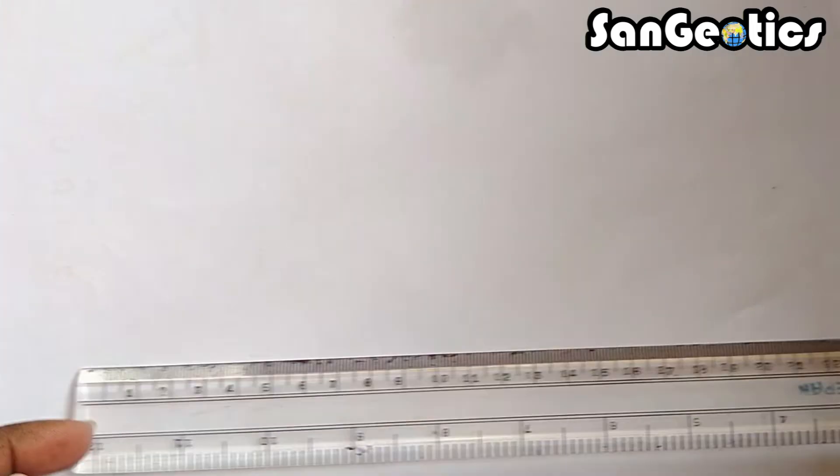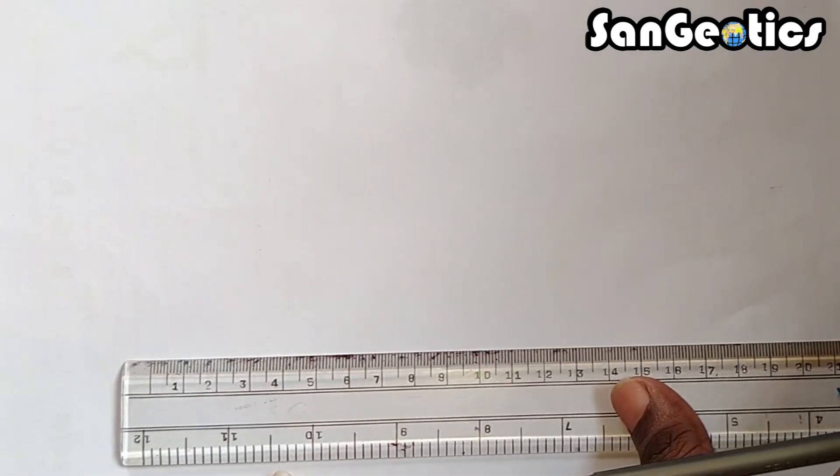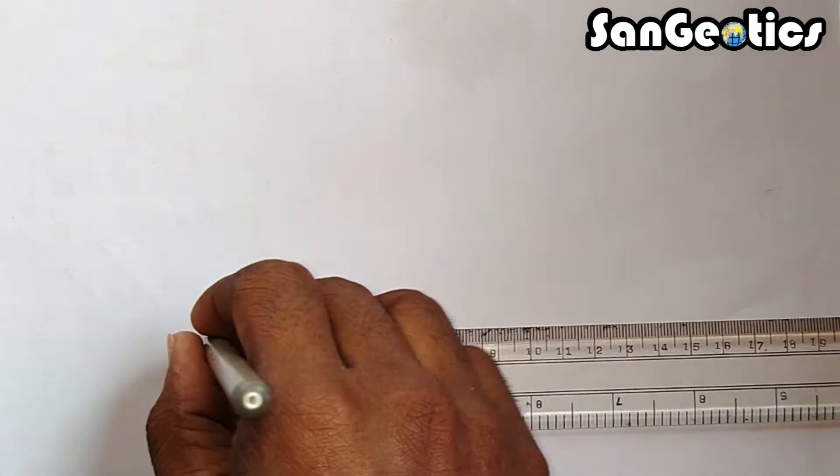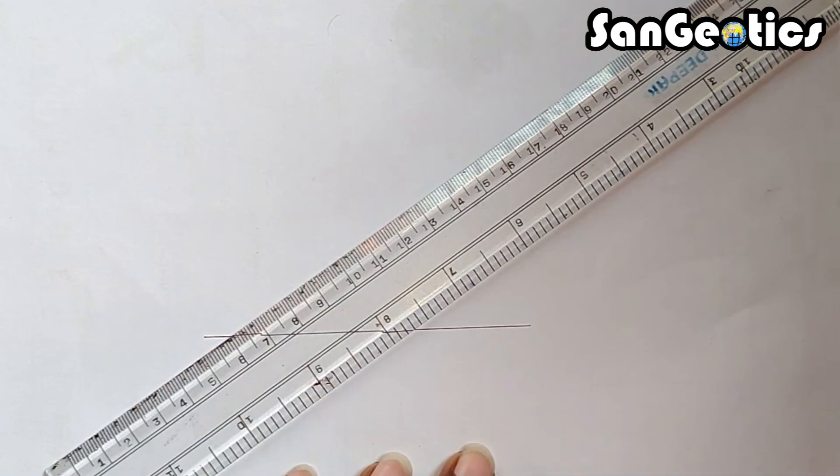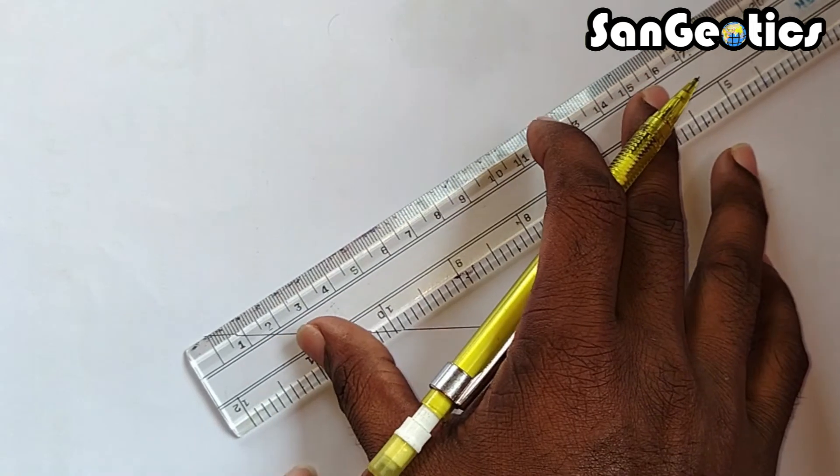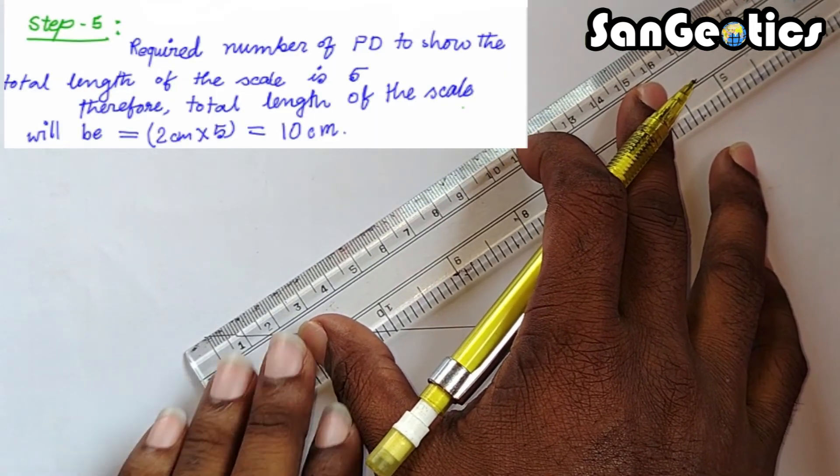Now, we construct a diagonal scale. At first, draw a 10 cm straight line. This is the total length of the scale which is calculated in step 5 of calculation part.